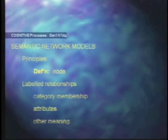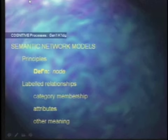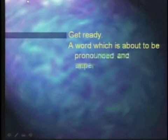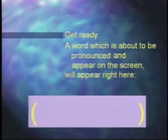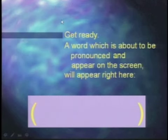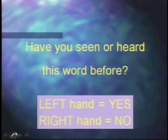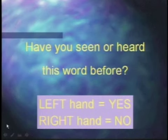One of the classics still referenced today was developed by Collins and Quillian. In 1969, they proposed a hierarchical model of semantic information. And to show you the limits on that model, I want you to get ready, because I'm going to show you something visually. A word is about to be pronounced and appear on the screen. I want you to vote — left hand means yes, you've seen or heard this word before; right hand means no. Even at home, I want you to do it because reaction time is what I'm driving toward here.